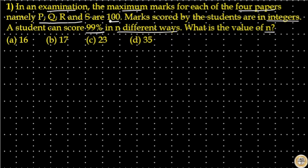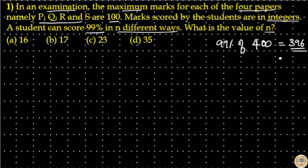Total marks is 100 for each paper, that means total marks for four papers is 400. And 99% of 400 is 396. 10% is 40 and 1% is 4, that means 99% is 400 minus 4, which is equal to 396.